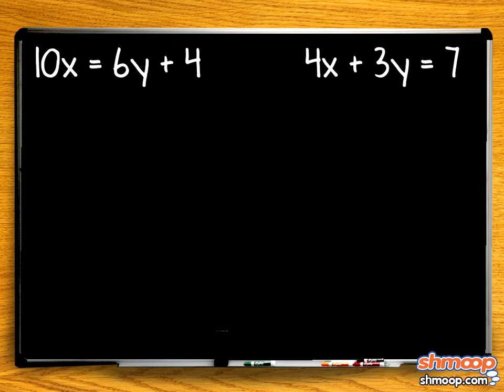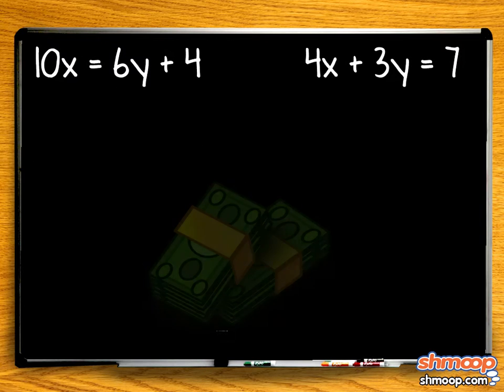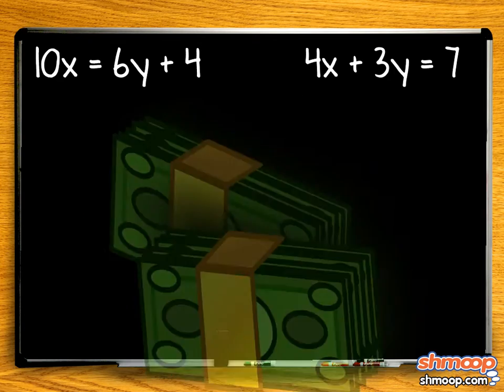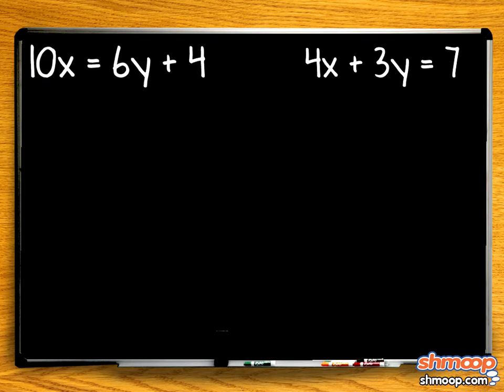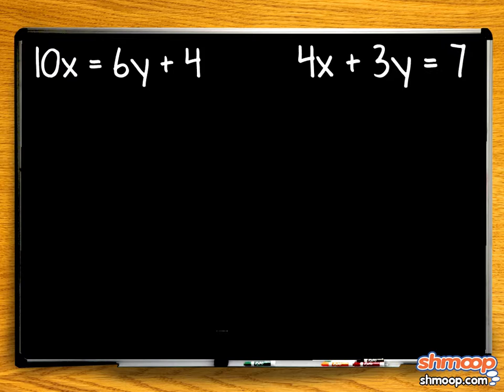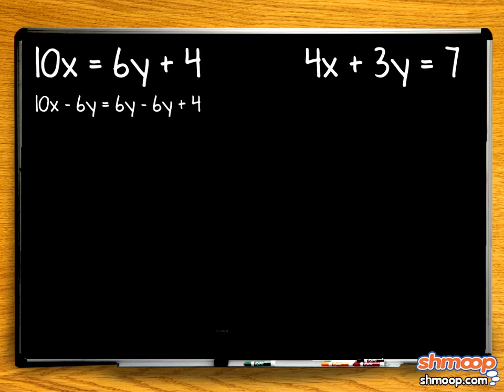We'll solve this by elimination, which is what will happen to Julius' tip if he doesn't deliver these pizzas in time. First, we need to put Cleo's equation into the same format as Julius. We do this by subtracting 6y from both sides, and we're left with 10x minus 6y equals 4.